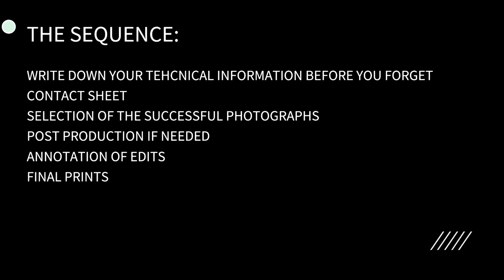So the sequence — think of this as a formula. Write down your technical information before you forget. As soon as you've taken your photo shoot, whether you shot on manual or automatic, write down that key information: aperture, shutter speed, ISO, your focal point, whether you used autofocus or manual focus. I've had students in the past forget to do this, leave their annotations till later and forget — and making up that information is not good and not really allowed.